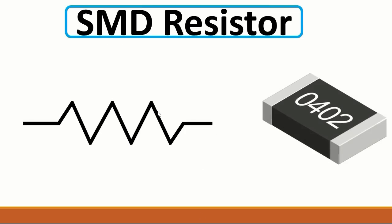We're going to begin with this component — this is basically an SMD resistor. SMD means surface mounted device. As you can see, this is a surface mounted device; this component is soldered directly to the motherboard. It's not a through-hole technology device like transistors and MOSFETs. This is the symbol for the resistor. We use this resistor to limit the current in order to avoid burning out other components.